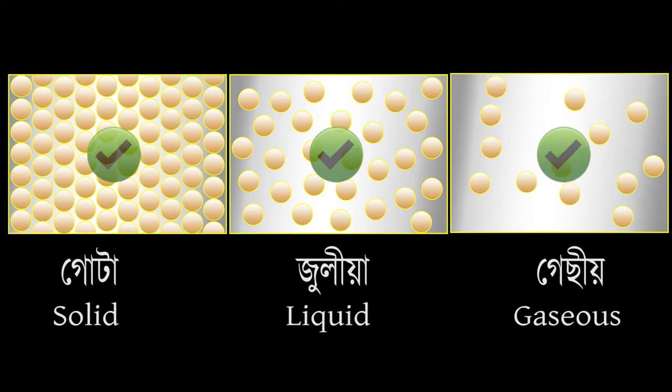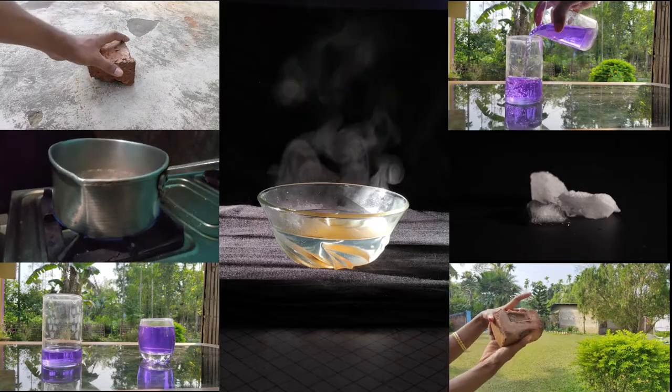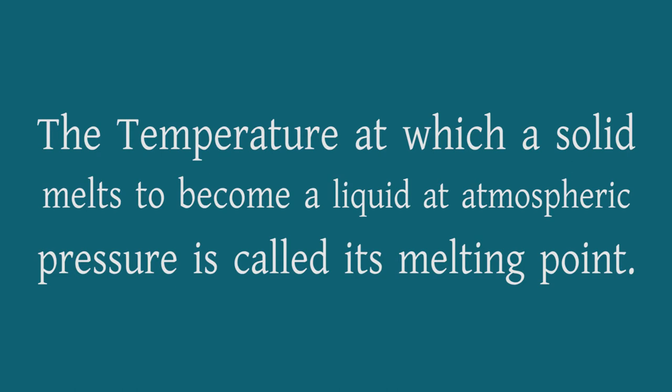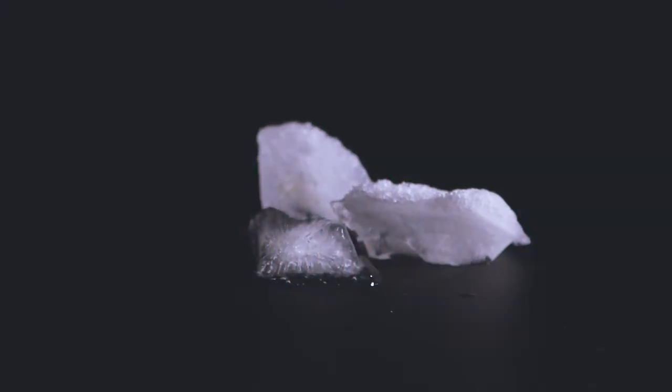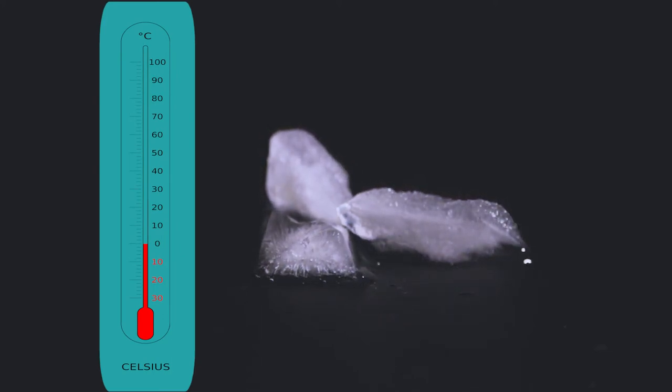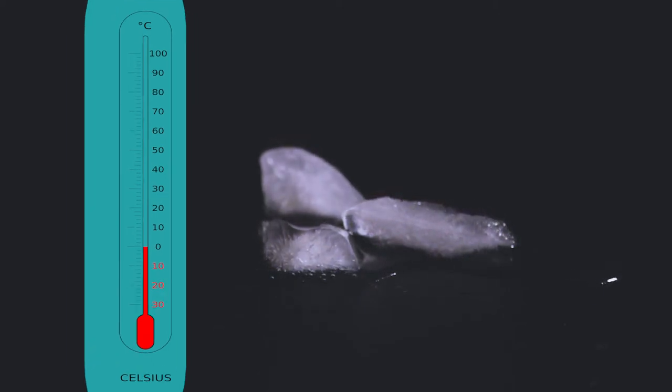The process in which a matter changes from solid to liquid state is called melting, and the temperature at which a solid melts to become a liquid at atmospheric pressure is called its melting point. We know that ice melts at 0 degrees centigrade. However, it is interesting to know that the temperature inside the beaker does not change until the ice melts completely. This happens even though we continue to heat the beaker.